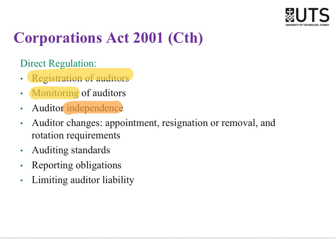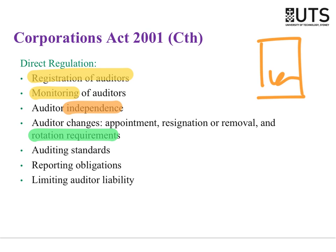There is a requirement that auditors actually sign what's called a Declaration of Independence and include it in their audit report — they sign and say yes, I was indeed independent, there was no conflict of interest, and therefore I was able to exercise objective judgment. There's also audit partner rotation. Out of every seven years, the maximum time an audit partner can serve is five years — that is listed out in the Corporations Act. The Corporations Act also gives the ASAs (Australian Auditing Standards) force of law — they are enforceable under the Corporations Act.